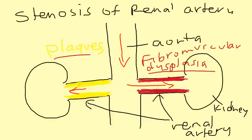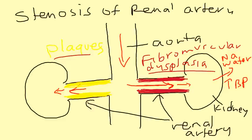Why does renal artery stenosis cause high blood pressure? When the arteries to the kidneys become narrow, less blood flows to the kidney. The kidney responds as if blood pressure is low — it thinks less blood is coming, so it reabsorbs more salt and water back into the blood vessels as a compensatory mechanism, which increases blood pressure.